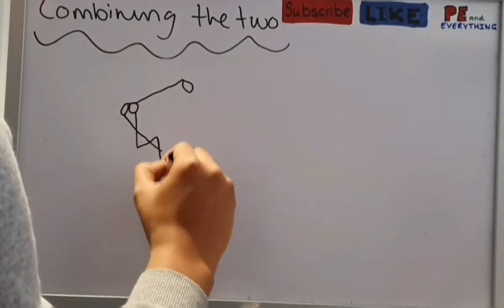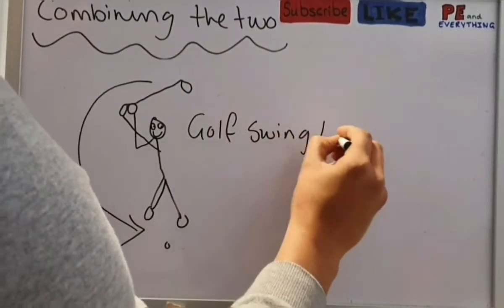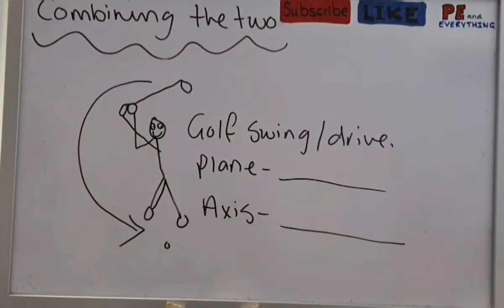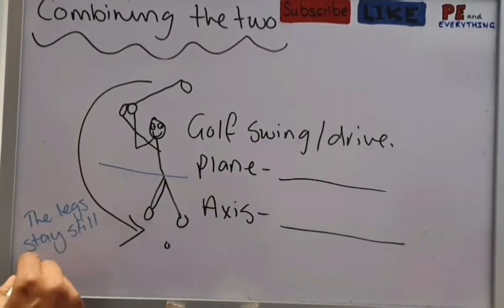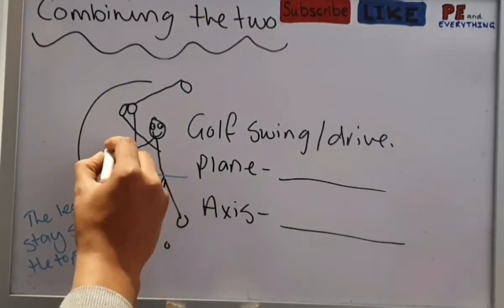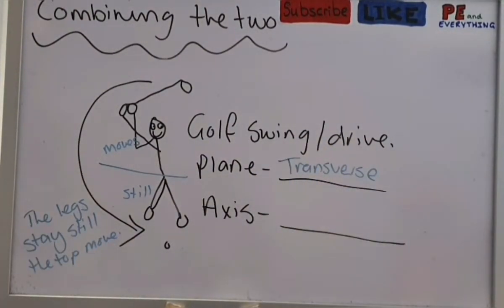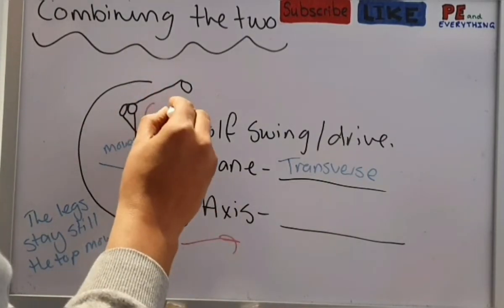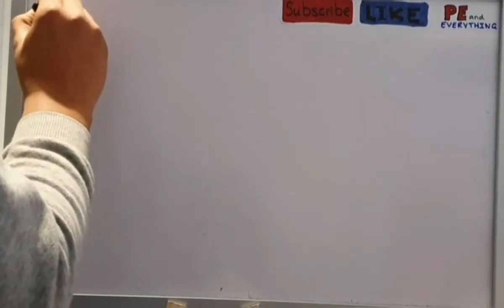If we look at another sporting example, but one a bit more tricky, we've got our golfer here and they're swinging to drive the golf ball. The plane would be—we know that for a golf swing, their feet stay static and their top half would move to hit the ball. So we're going to say this is on the transverse plane. For the axis, they start at one point and they rotate their body around to hit the ball and then come around the other side. So I'm saying that this would be on the vertical axis.